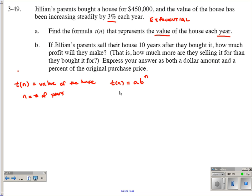So let's look at it here now. Remember, A is going to be our initial value. In this case here, it's going to be referring to how much did they buy the house for. So the initial value in this case, we're looking at $450,000.